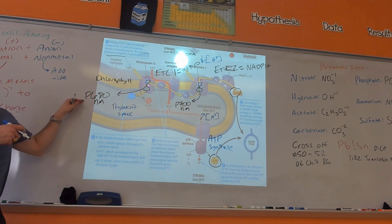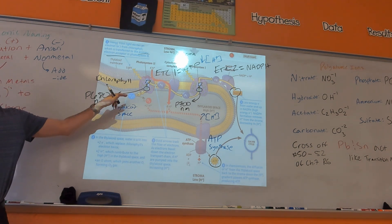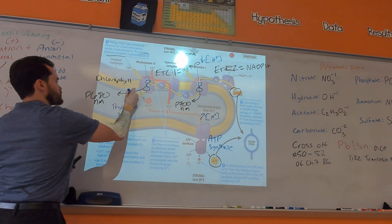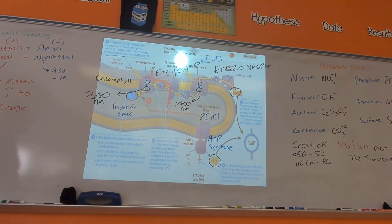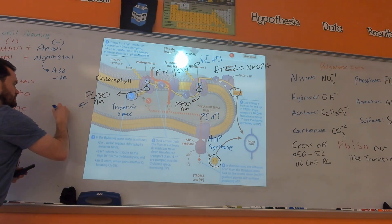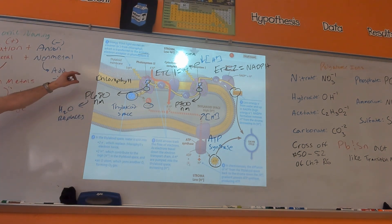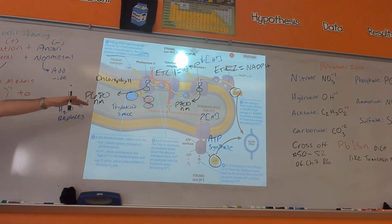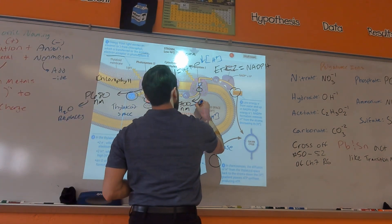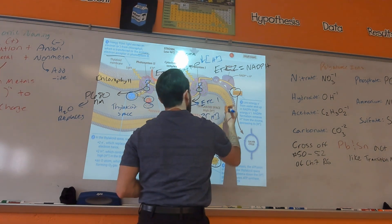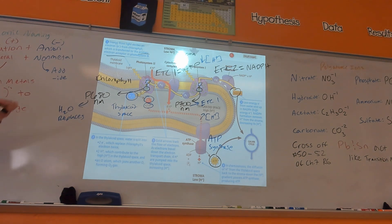Whenever we lose electrons from P680 and P700, we have to replace them. We replace the electrons of P680 using water — H2O replaces those electrons. When you remove electrons from water, that's another source of hydrogen ions for the gradient, and in the process that creates the oxygen that plants release. We replace the electrons of P700 through electron transport chain 1 — those electrons travel from molecule to molecule and replace the ones lost from P700.